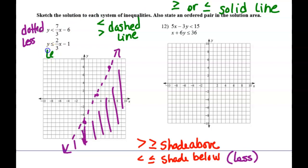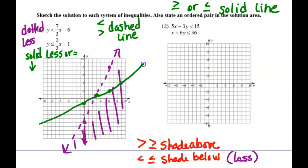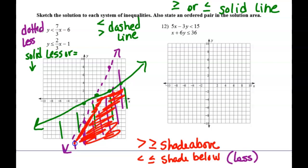This second one is also a less than, but it is a less than or equal to, which means we need a solid line — but we're still going to shade below. It starts at negative 1 and goes up 2 and over 3. It is a solid line, and since it's less than, we shade below. The double-shaded area is in here — below the green one and below the purple one.